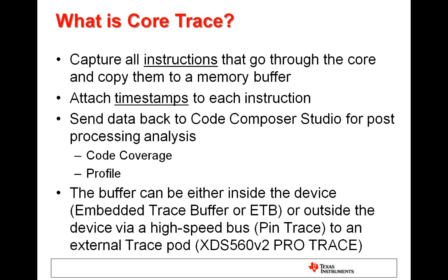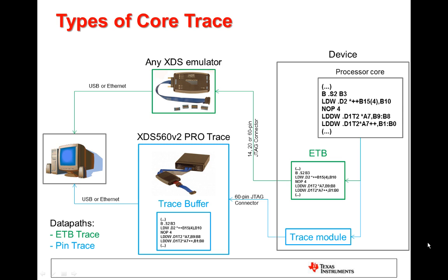For the ones that have this feature, there are two implementations with different levels of complexity: embedded trace buffer or ETB, and pin trace using an external emulator pod. Core trace can be done either via the embedded trace buffer or using external pins and a trace pod. The embedded trace buffer or ETB is a small memory area that is tightly coupled to the processing core of the device and contains a copy of all the instructions executed by it. Being small, this memory is able to capture a smaller sample of instructions that pass through the core, and it only operates in circular mode, which means that the old instructions are overridden by newer ones. However, the biggest advantage is that it allows performing trace with no need to add hardware to the board and any XDS emulator can be used.